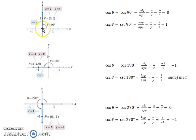So all you have to do is know that point and the radius, and you can always set these up. So for 180, our point is negative 1, 0, which means x is negative 1, y is 0, r is still 1. So x over r would be negative 1 over 1, or negative 1. r over y, the reciprocal of the sine, would be 1 over 0, which is undefined.